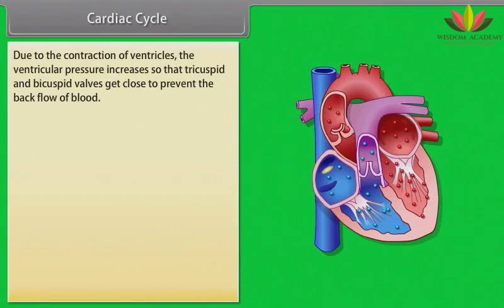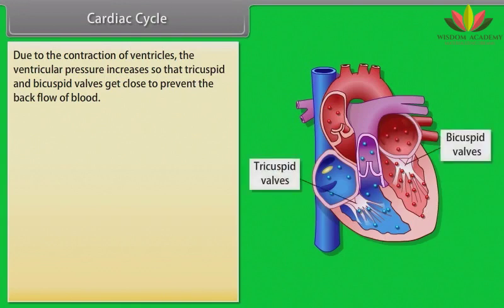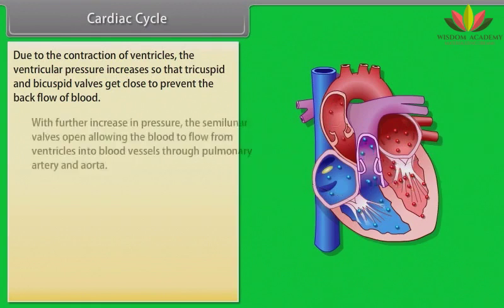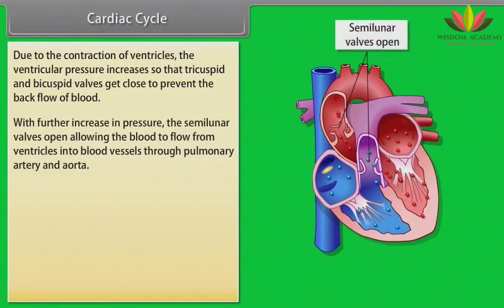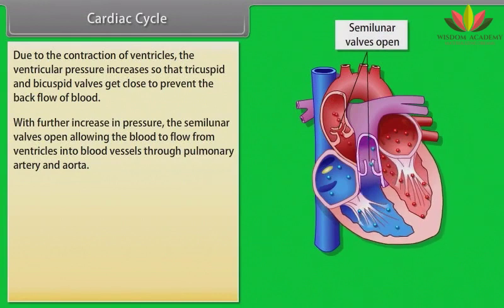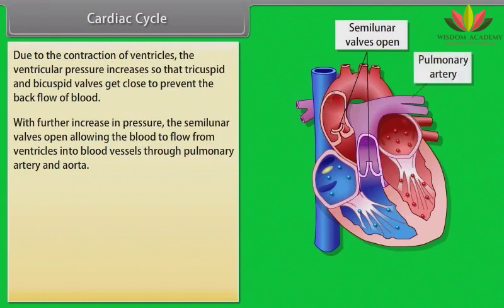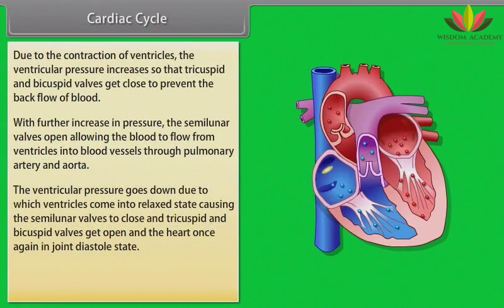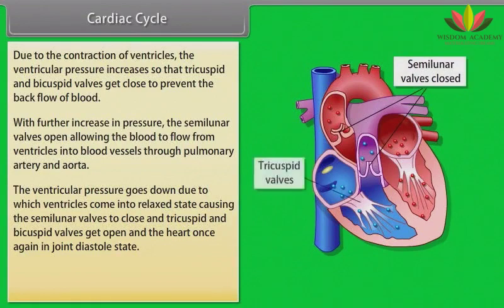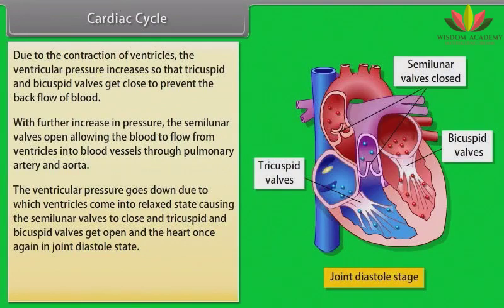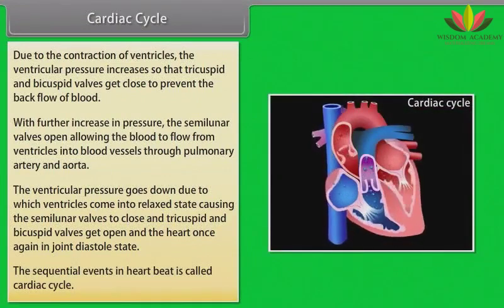Due to ventricular contraction, ventricular pressure increases, causing the tricuspid and bicuspid valves to close and prevent backflow of blood. With further increase in pressure, the semilunar valves open, allowing blood to flow from the ventricles into the pulmonary artery and aorta. Ventricular pressure then drops, the ventricles relax, the semilunar valves close, and the tricuspid and bicuspid valves reopen — returning the heart to joint diastole. The sequential events in one heartbeat constitute the cardiac cycle.